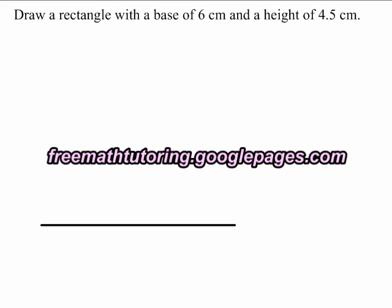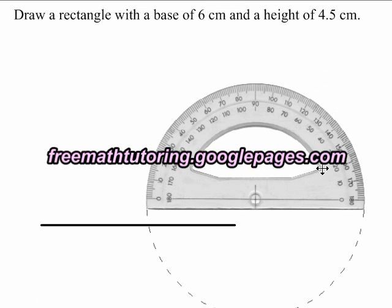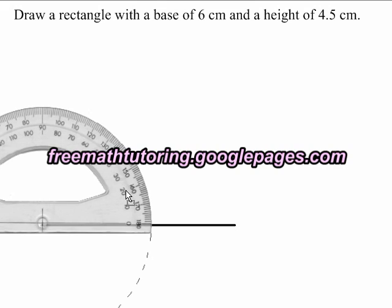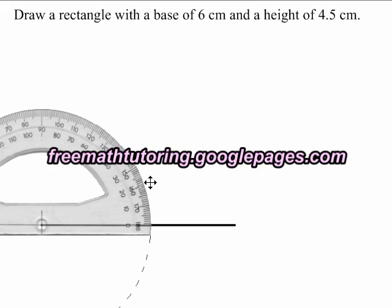The second thing I do is place the protractor at the end of this line and draw a 90 degree angle. I make it 4.5 cm long.